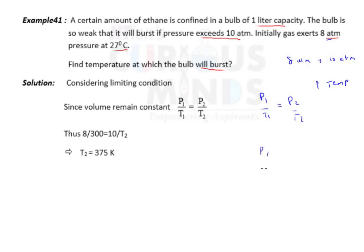So P1 by P2 is nothing but T1 by T2, right? Now we know that P2 is 10, P1 is 8. So 10 by 8 is nothing but T2 by T1. P2 is 10, this is 8. So 10 by 8 is T2 by T1.